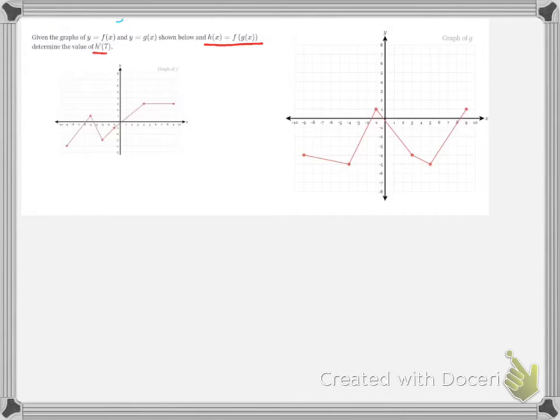We're asked for H'(7). That's going to equal the inside function's derivative, G'(7), times F' of G(7).